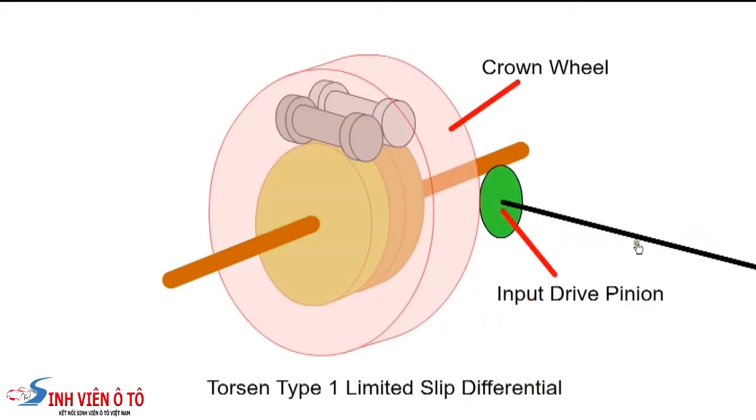During normal operation, the input drive pinion drives the crown wheel and cage. The Torsen will allow for speed difference when cornering. However, if one wheel loses traction, the difference in torque causes the differential to bind together and limit the slip.